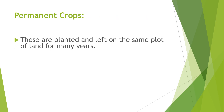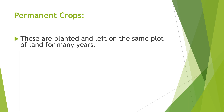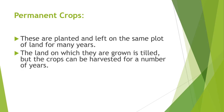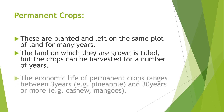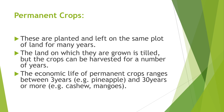Permanent crops are planted and left on the same plot of land for many years. The land on which they are grown is tilled, but the crops can be harvested for a number of years. The economic life of permanent crops ranges between 3 years (e.g. pineapple) and 30 years or more (e.g. cashew, mangoes).